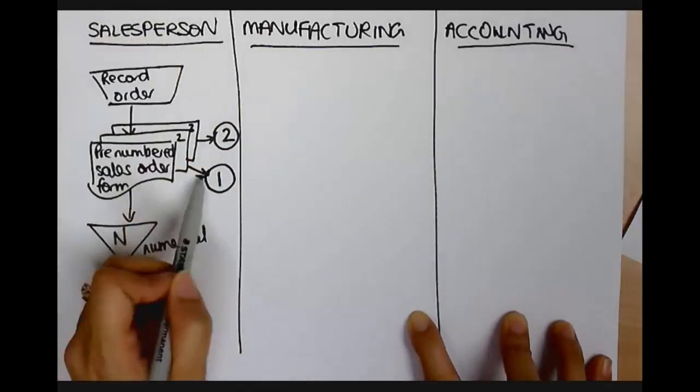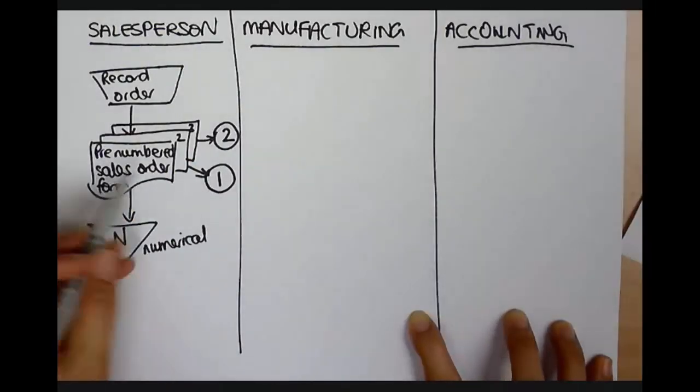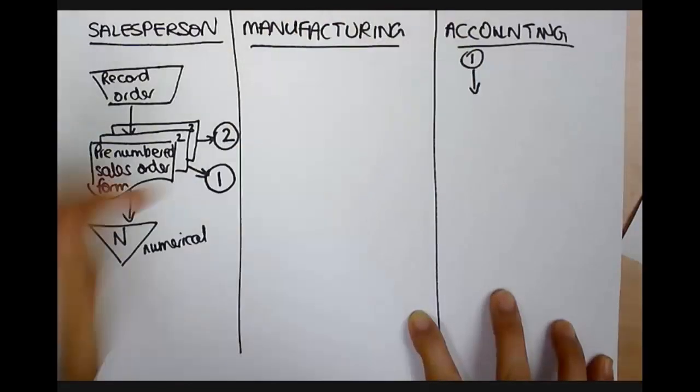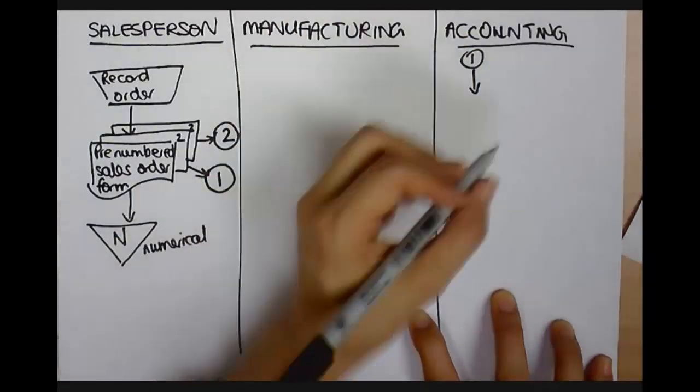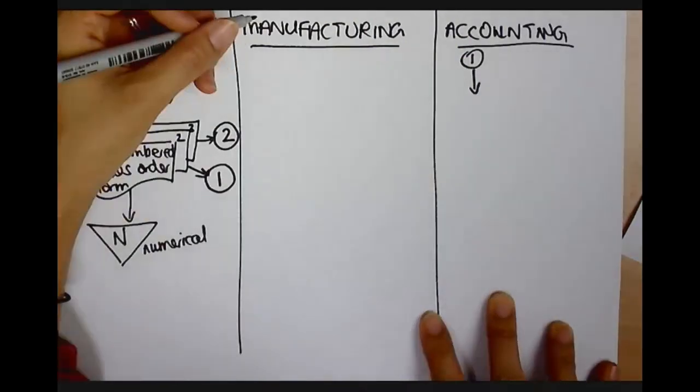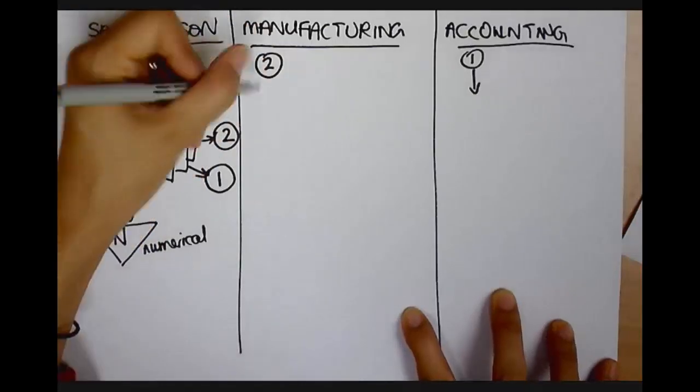Alright, so here I'm going to use those little connectors from before they talked about. Okay, now theoretically I could draw a line all the way over here. But I'm going to say, okay, accounting receives that pre-numbered sales invoice. Alright, now the second, third invoice goes to the manufacturing department. Alright, so manufacturing gets this invoice here.